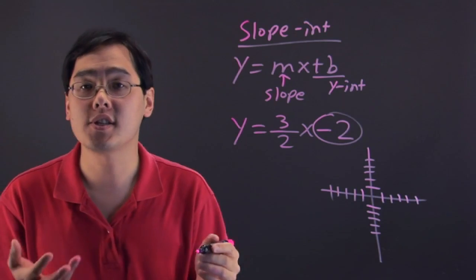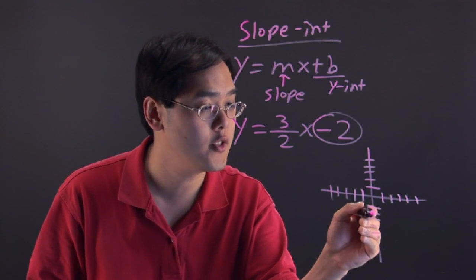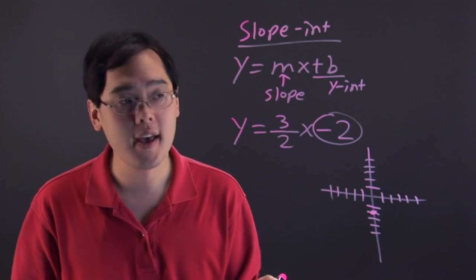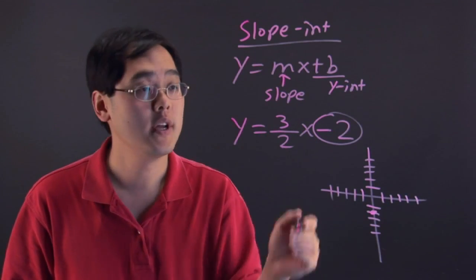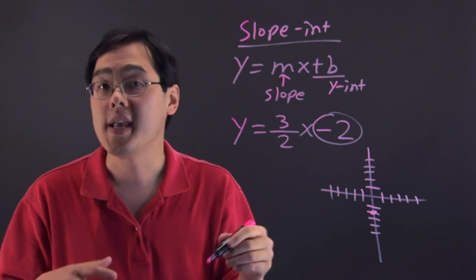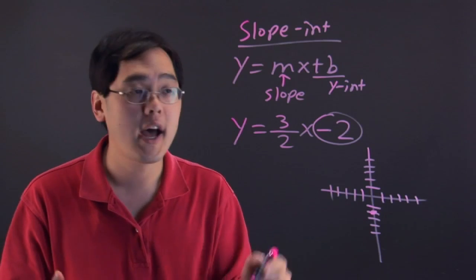The y-intercept is negative 2. That means it touches the y-axis at negative 2, and then you graph the next point using what you know about the slope. The slope is 3 halves. You might remember that slope means rise over run.